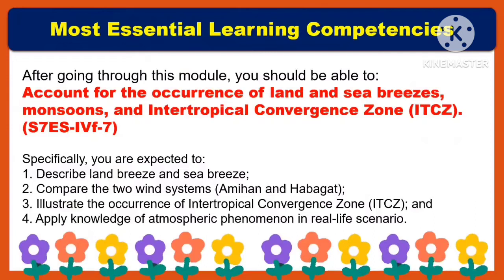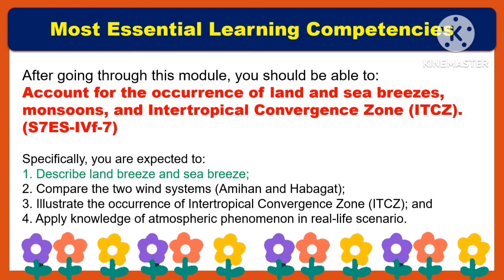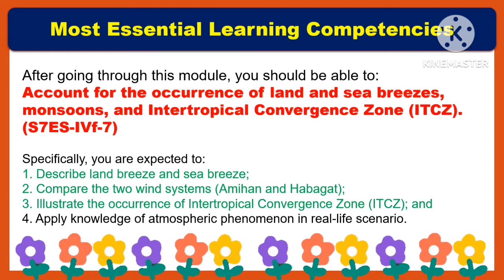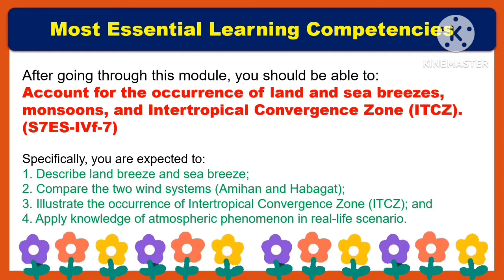For the most essential learning competencies, after going through this lesson, you should be able to account for the occurrence of land and sea breezes, monsoons, and Intertropical Convergence Zone, or ITCZ. Specifically, you are expected to describe the land breeze and sea breeze, compare the two wind systems — the Amihan and the Habagat — illustrate the occurrence of the Intertropical Convergence Zone, and apply knowledge of atmospheric phenomena in real-life scenarios.